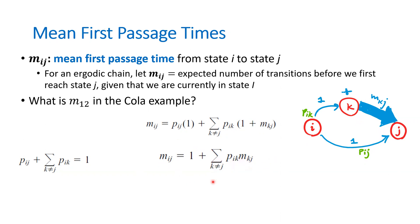We also have another formula: the expected number of steps to return to itself is m_ii = 1 / π_i. For example, m_11 means if right now I'm drinking cola one, on average how many purchases do I make until I purchase cola one again. Or if it's sunny today, on average how many days pass until it's sunny again, or if it's rainy today, how many days until it's raining again.